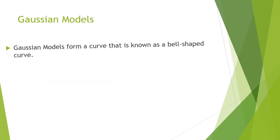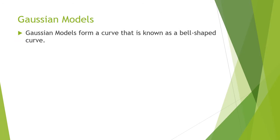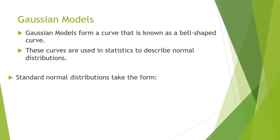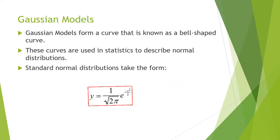A Gaussian model forms a curve that is known as a bell-shaped curve. The curves are used in statistics to describe normal distributions. A standard normal distribution will take this form: y equals 1 over square root of 2 pi, times e to the negative x squared over 2.